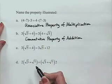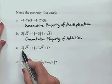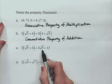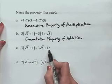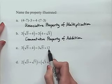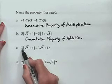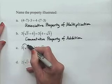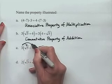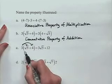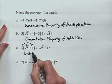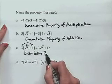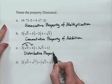For part C, we have 3 × (√5 + 4) = 3√5 + 12. The 12 came from taking the multiplication by 3 and distributing it to each term inside the parentheses. This is called the distributive property — specifically the distributive property of multiplication over addition.